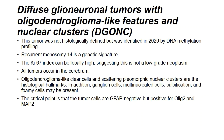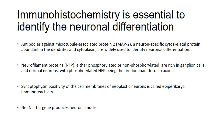Oligodendroglioma-like clear cells with scattered pleomorphic nuclear features are histological hallmarks of DGONC. Ganglion cells, multinucleated cells, calcification, and Fermi cells may also be present. Critically, these tumors are negative for GFAP and often positive for Olig-2 and MAP-2. For identifying neuronal differentiation, essential IHC markers include MAP-2 (a neuron-specific cytoskeleton protein abundant in dendrites), neurofilament protein (present in ganglion cells and normal neurons), NeuN (neuronal nuclei gene product), and synaptophysin (showing characteristic cell membrane positivity in neoplastic neurons).